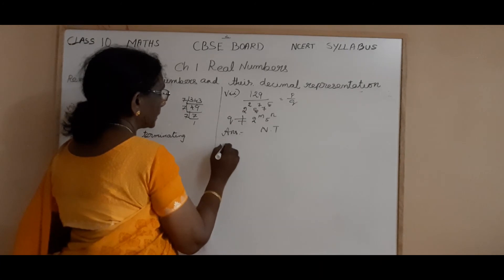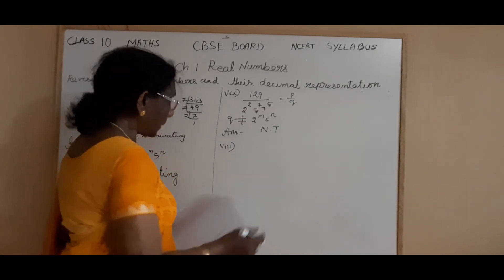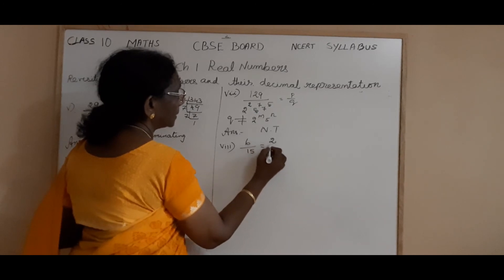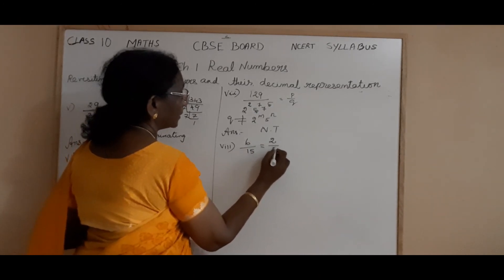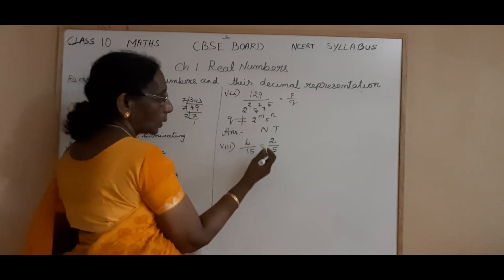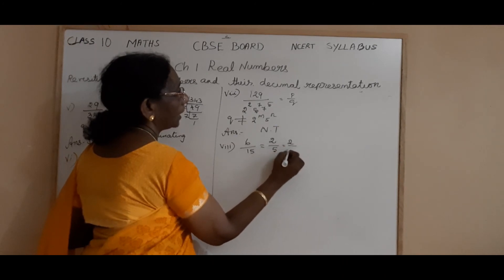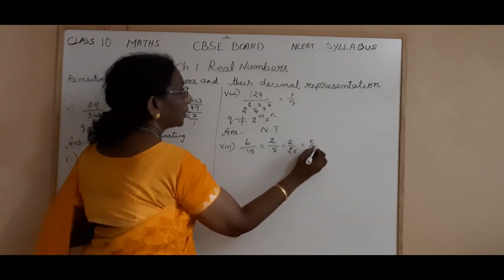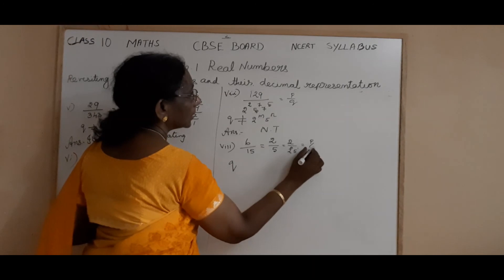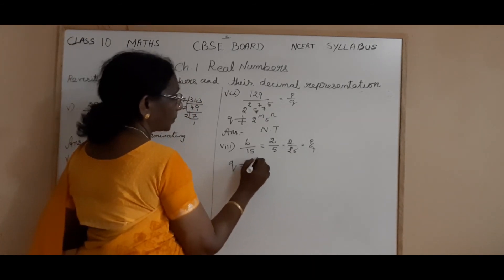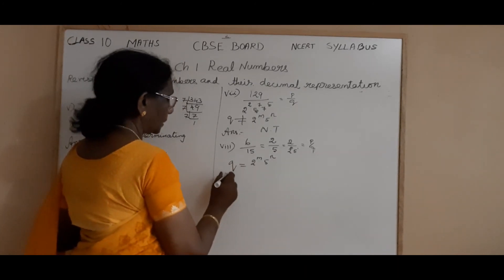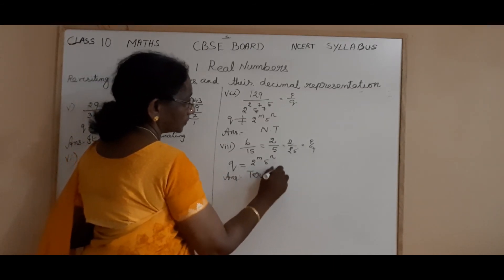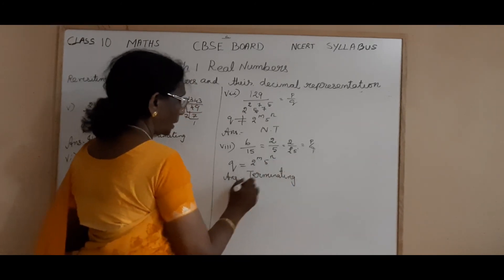Sum number 8: 6 by 15. Both are divisible by 3: 3 into 2 is 6, and 3 into 5 is 15. So it simplifies to 2 by 5. Now it is in the form of 2 by 2 to the power 0 into 5 to the power 1. So Q is in the form of 2 power M into 5 power N. Therefore the answer is: it is terminating.